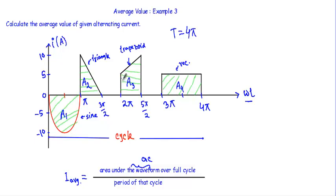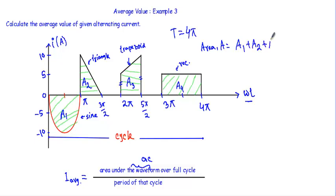For this trapezoid, this line and this line will be the two parallel lines, and this horizontal axis will indicate the distance or separation between the two parallel lines. The total area of this waveform — let's denote it as A — will be the sum of areas covered by the sine wave, triangle, trapezoid, and rectangle. That means A equals A1 plus A2 plus A3 plus A4.